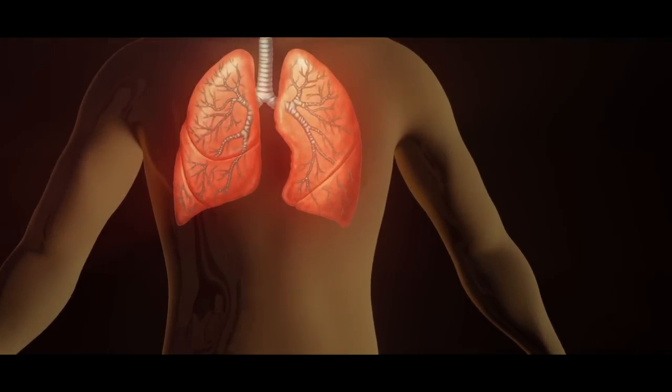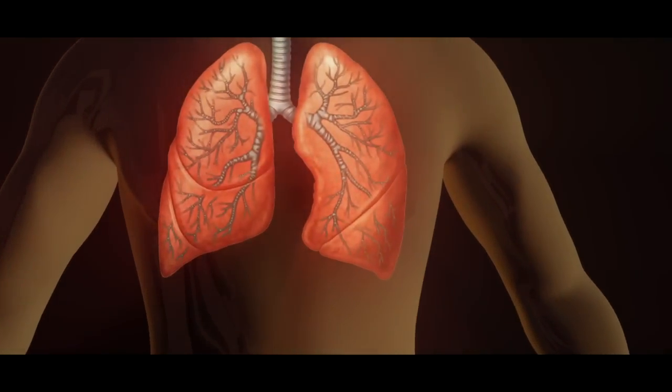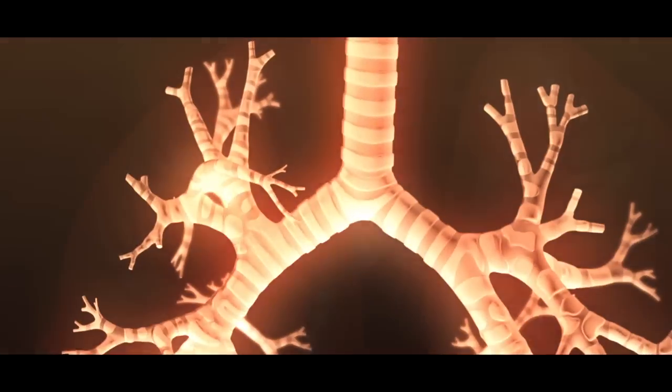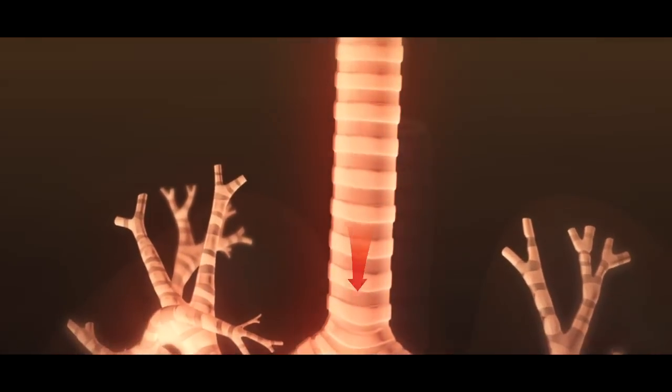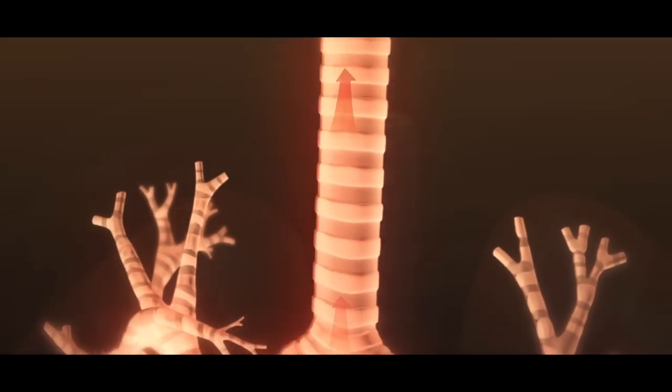During normal respiration, when we inhale, air goes in through the nose to the upper airways. Then it moves through the trachea or windpipe. The trachea branches into two large tubes called bronchi.